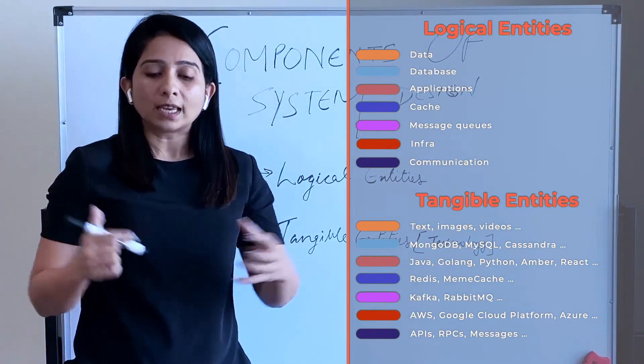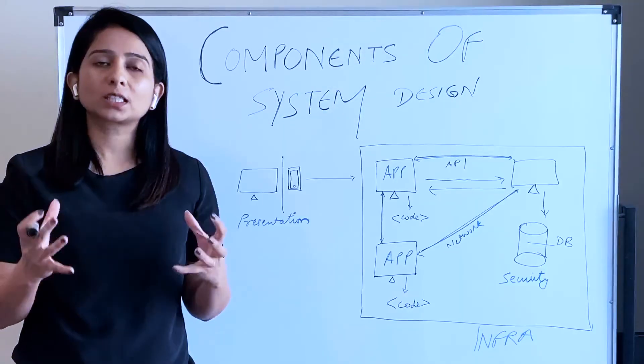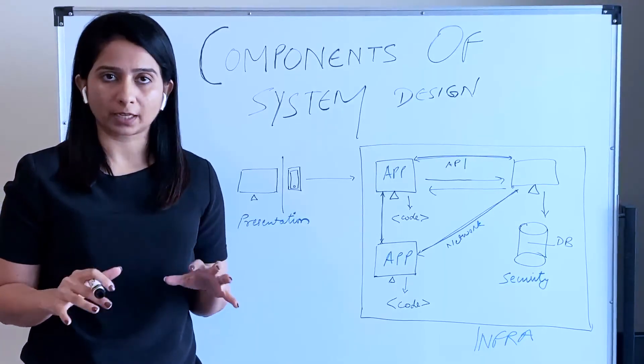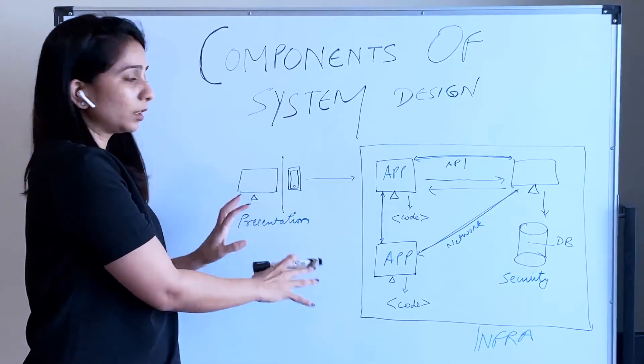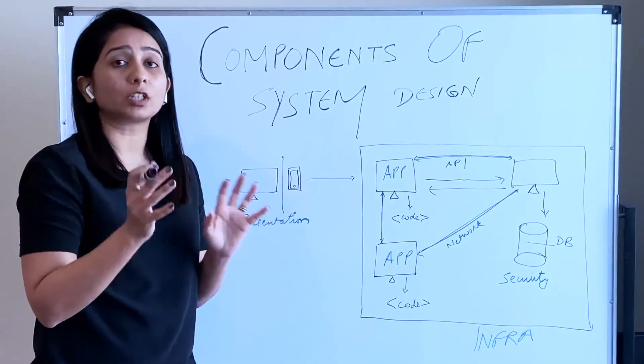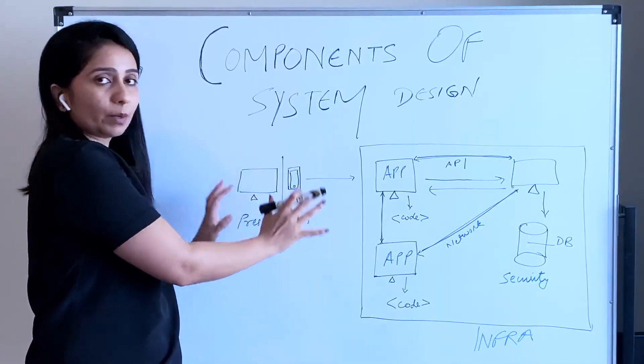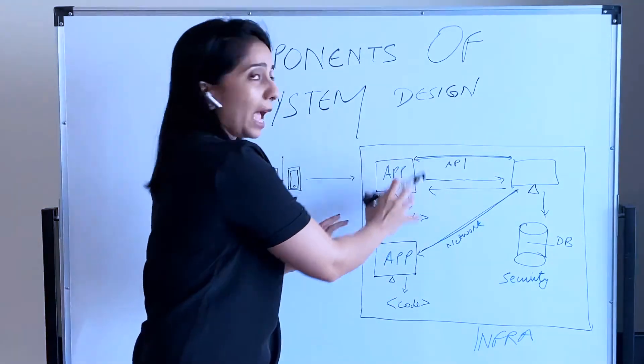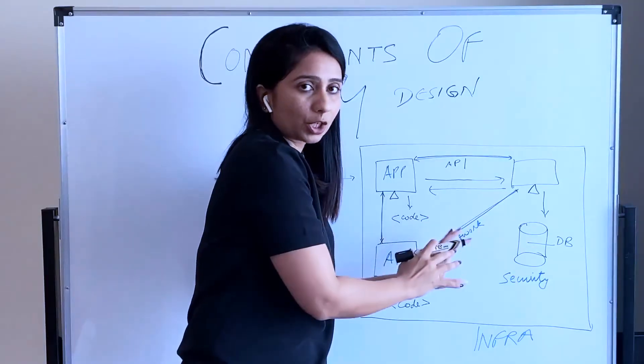So now let's merge all these and look at this picture and try to make more sense out of it. Let's see a very superficial view of what a system looks like. So as we discussed, there is a presentation layer where the user can interact with the system through either a desktop app, website, or mobile app, which interacts in the backend with our system, with the applications.